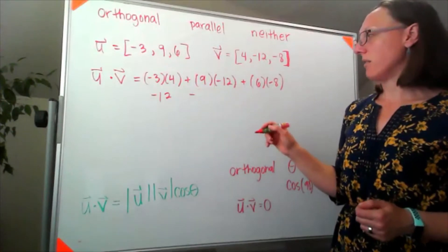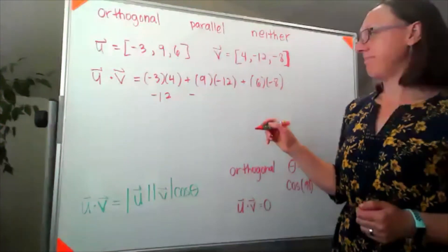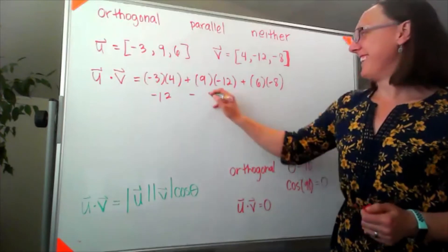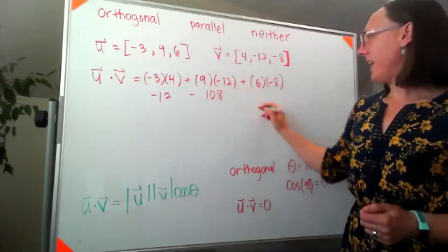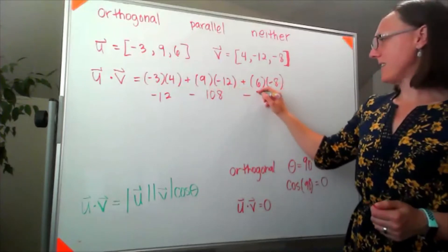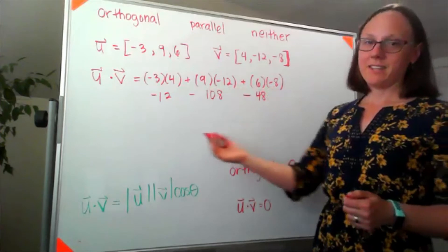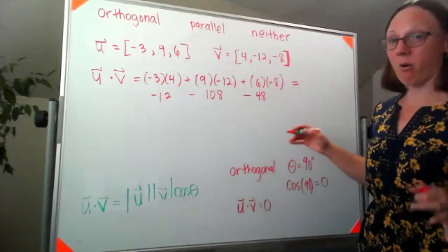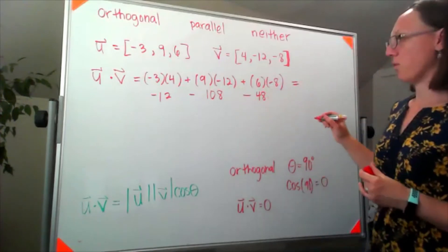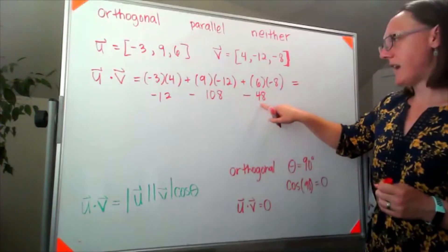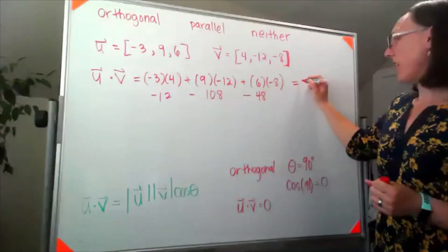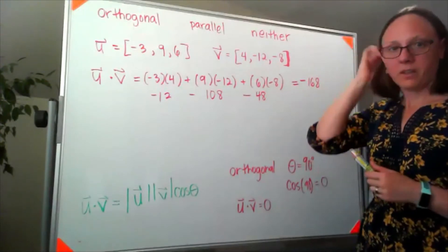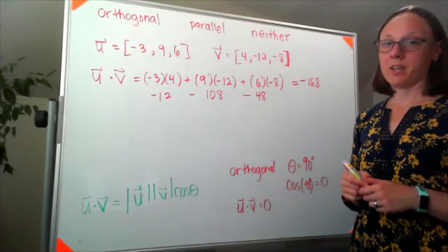9 times 12, I'm having a great day here. 108 and 6 times 8 looks like 48. So if I add all of those together, by the way if anyone thinks I made a mistake in the arithmetic stop me now so that we make sure that we've got the right answer moving forward. So negative 12 and negative 48 that should be a negative 60. So if that negative 168. Well that's definitely not 0 so they're not orthogonal.